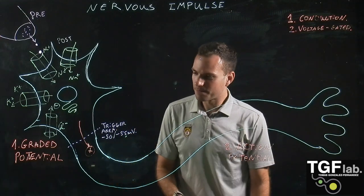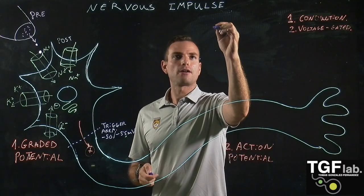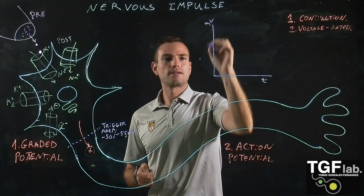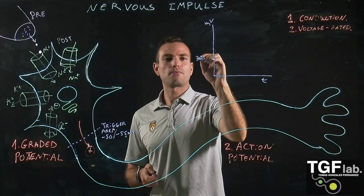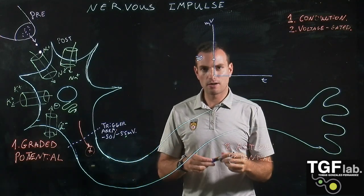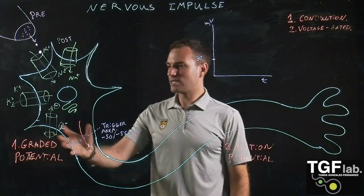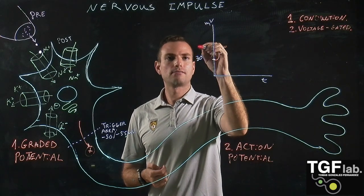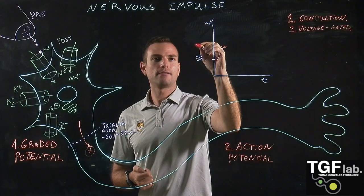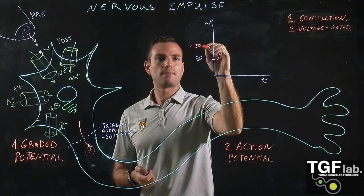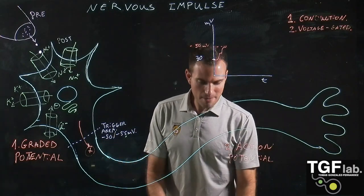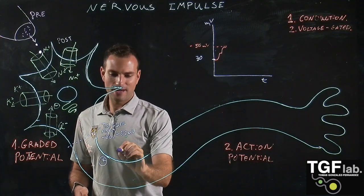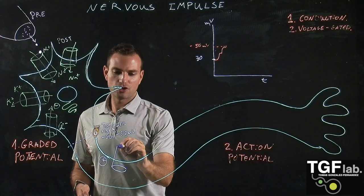So how does this happen? Let's put a graph here. We have time on one axis and millivolts — our membrane potential — on the other. The resting membrane potential was -70 millivolts, as we've seen before. Let's say that all these graded potentials are added to each other and generate an intensity enough to reach the trigger area at around -50 millivolts. This depolarization of the membrane arrives at a voltage-gated ion channel.